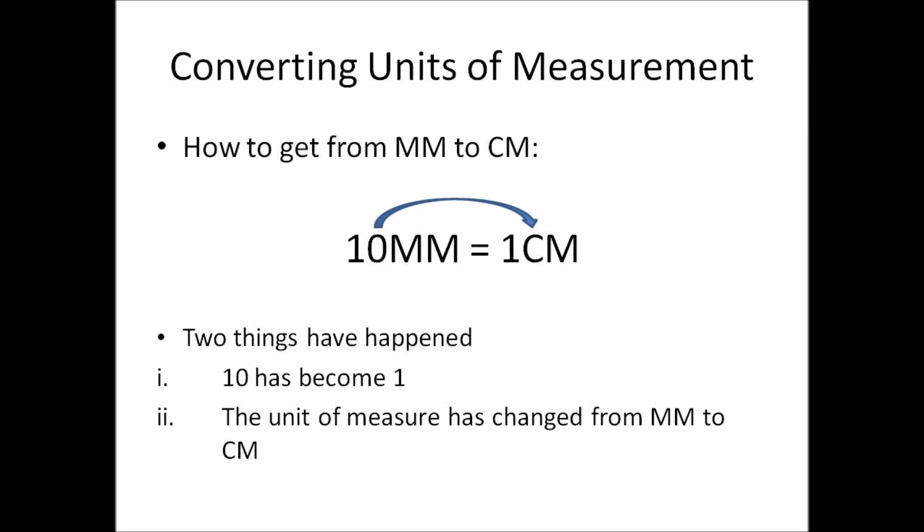In mathematics, there's a reason behind every calculation. Just through observation, 10 millimeters is equal to 1 centimeter — you'll see that the number 10 changes to 1, and the unit of measure changes from millimeters to centimeters. There's a reason why this happens, and that is the basis of the formula to convert millimeters to centimeters, which we discuss next.